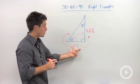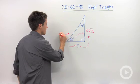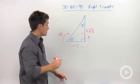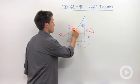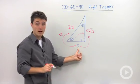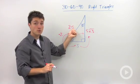Now to go from your shorter leg to your hypotenuse, all you need to do is multiply by 2. So this is going to be 2 times s. So if s is 5, your hypotenuse will be 10.